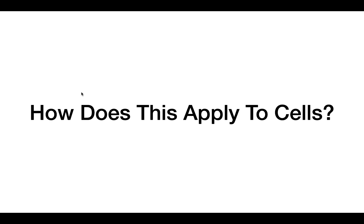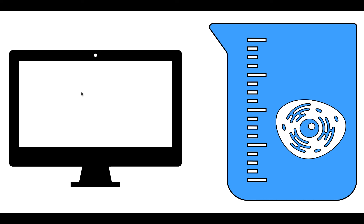So how does this apply to cells? Let's say we have a cell inside a beaker filled with solution. In cells, it's important to realize that the hydrostatic pressure difference across the cell membrane inside our body is often going to be zero. The reason why is because if the hydrostatic pressure difference weren't zero, cells could be damaged. So the main thing that determines water movement across the cell is going to be the osmotic pressure.